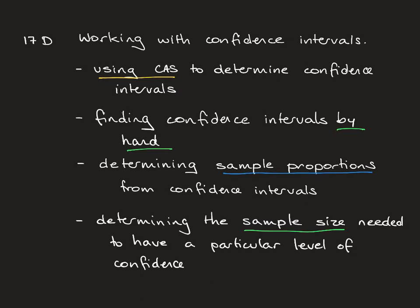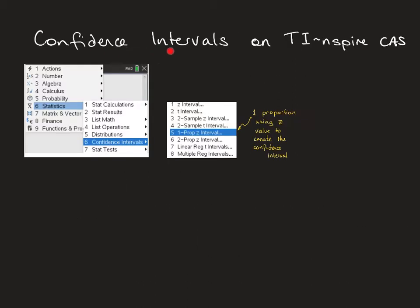So let's have a look with the CAS. To work with a confidence interval on TI-Inspire you need to use the statistics menu — it's not in the probability section, it's in the statistics menu. Under the statistics menu you'll find confidence intervals, and the one we want is the one prop Z interval. So we're working with one proportion, one sample proportion, and we're using Z values to create that confidence interval. There are also all other different sorts of confidence intervals available.